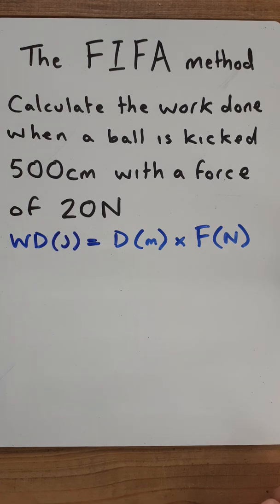We've got a question on the board at the moment and it says calculate the work done when a ball is kicked 500 centimeters with a force of 20 newtons and underneath that in blue I've written the equation that is relevant to that question.